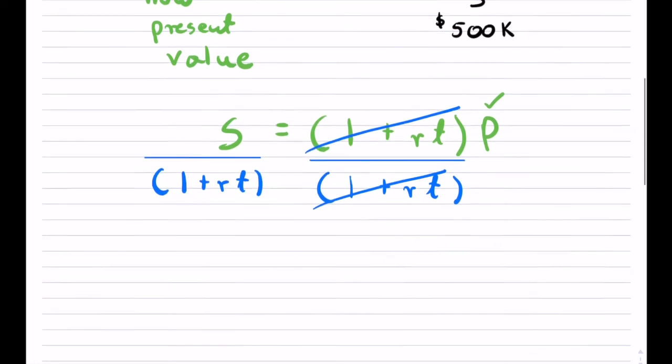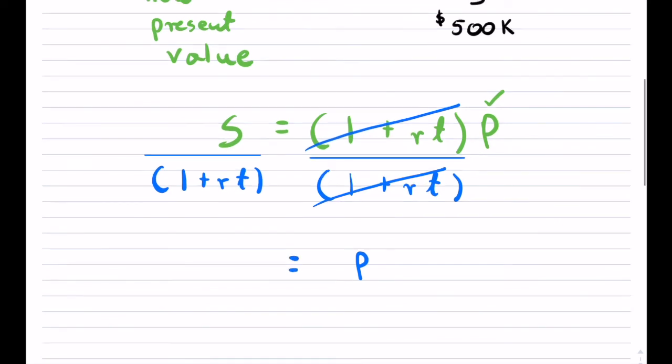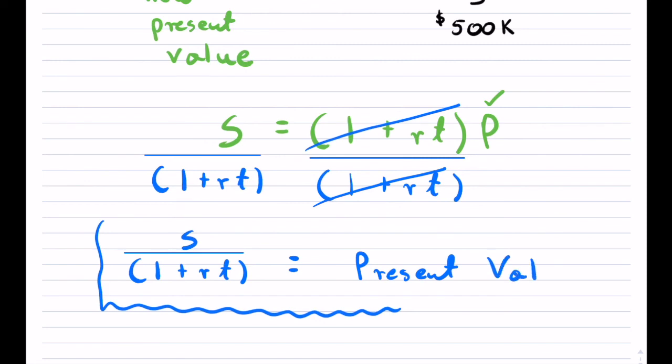And that is actually your present value formula. So notice what happens is you have your present value is equal to your future value divided by 1 plus RT. And this is your present value formula that you can use if you ever wanted to bring money from the future back into the present, to find the present or maybe the principle that you wanted to start and invest in.